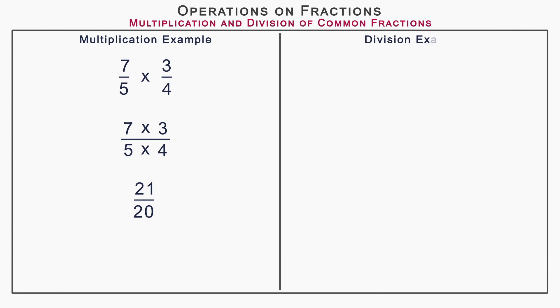Now take an example for division: 7 upon 5 divided by 3 upon 4. Division of common fraction is not possible. Here, division is converted into multiplication. Keep the first fraction as it is, change the division sign into multiplication, and take the reciprocal of the second fraction 3 by 4, which is 4 by 3.